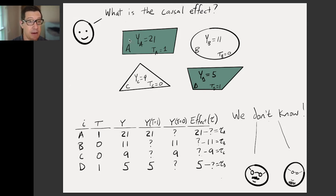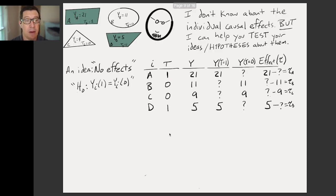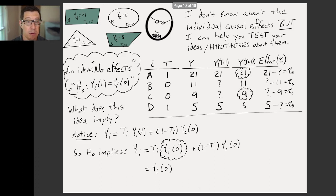Now, what about Fisher? Back to the farmer asking the question and Fisher also saying the same thing as Neyman. I don't know what the effect is on A. But Fisher has a different idea. Fisher says, I don't know about the individual causal effects, but I can help you test your ideas or your hypotheses about them. So he might say, well, tell me what you think the effect might be. And the farmer might say, well, for example, here's one possible idea, which is that it doesn't matter. The fertilizer is a waste of my money. Whether or not I had put fertilizer on field A, I would have seen 21 okras, and if I had put it on B, I would have seen 11 okras. Right. So that's the criticism. The idea is that maybe it wasn't worth buying the fertilizer.